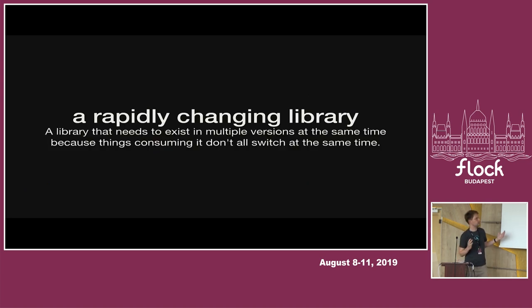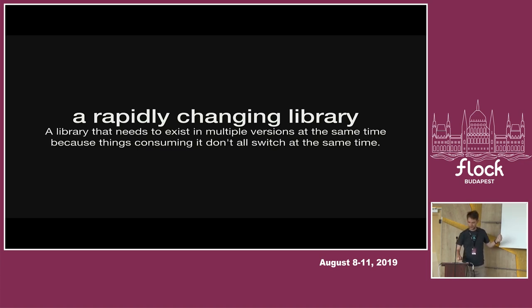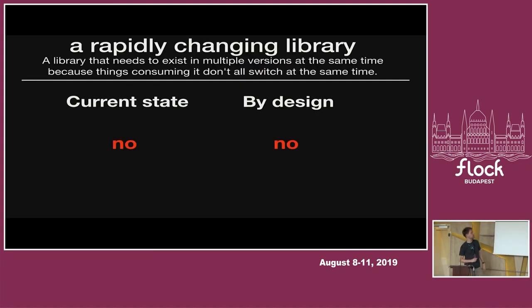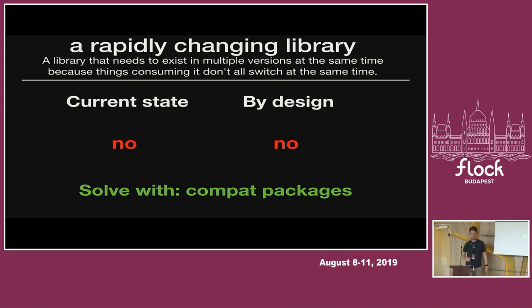The last example is a library that changes very rapidly and applications need to adapt to it, but they don't all do it at the same time. So you'll need multiple versions of the library on the system at the same time. Examples? Git2, which caused a lot of problems in Europe very recently, and ICU. The answer is no and no — modularity doesn't really deal with parallel installation. But there are existing mechanisms we can still use, like compat packages. It doesn't make sense to put them in streams. This is something modularity doesn't address, but it's been addressed before and we don't have to solve it again.